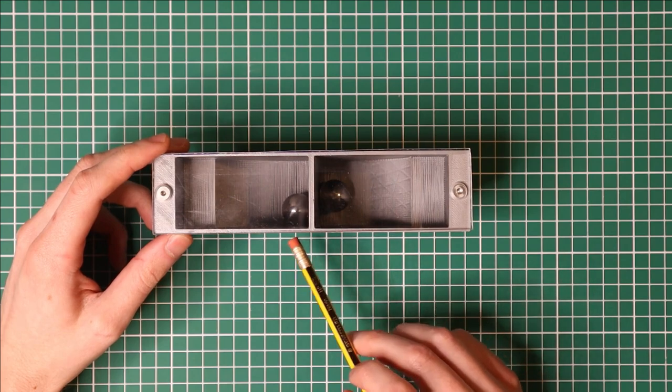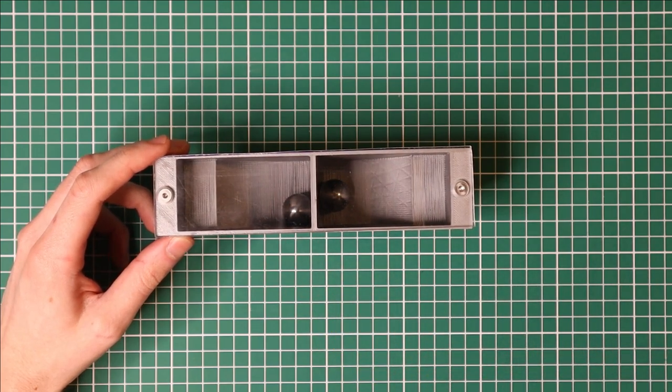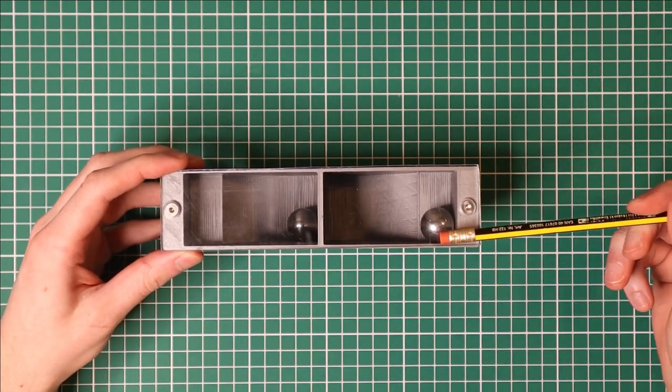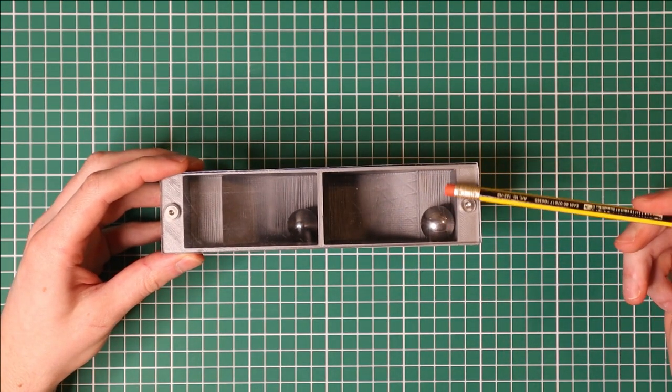Now this thing has two cavities and each cavity contains a steel ball. And if I tilt the puzzle like this, you can see that the steel ball here rests on this little ledge.